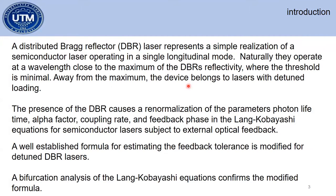A distributed Bragg reflector (DBR) laser represents a simple realization of a semiconductor laser operating in a single longitudinal mode. They naturally operate at wavelengths close to the maximum DBR reflectivity. The presence of DBR causes a renormalization of parameters — photon lifetime, alpha factor, coupling rate, and feedback phase — in the Lang-Kobayashi equation for semiconductor lasers subject to external optical feedback. A well-established formula for estimating feedback tolerance is modified for detuning in DBR lasers, and for the first time we did a bifurcation analysis of the Lang-Kobayashi equation which confirms the modified formula.